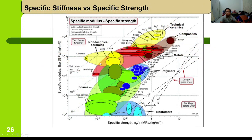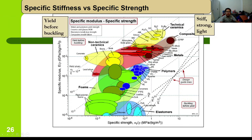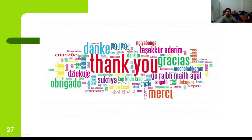The specific stiffness versus specific strength chart is also a useful chart. Dividing into four quadrants: materials on the upper right are stiff, strong, and light because both stiffness and strength have been divided by density; materials on the upper left generally experience yielding because of their high stiffness before buckling or failing; materials on the lower right experience buckling before yielding, meaning they fail first without yielding.